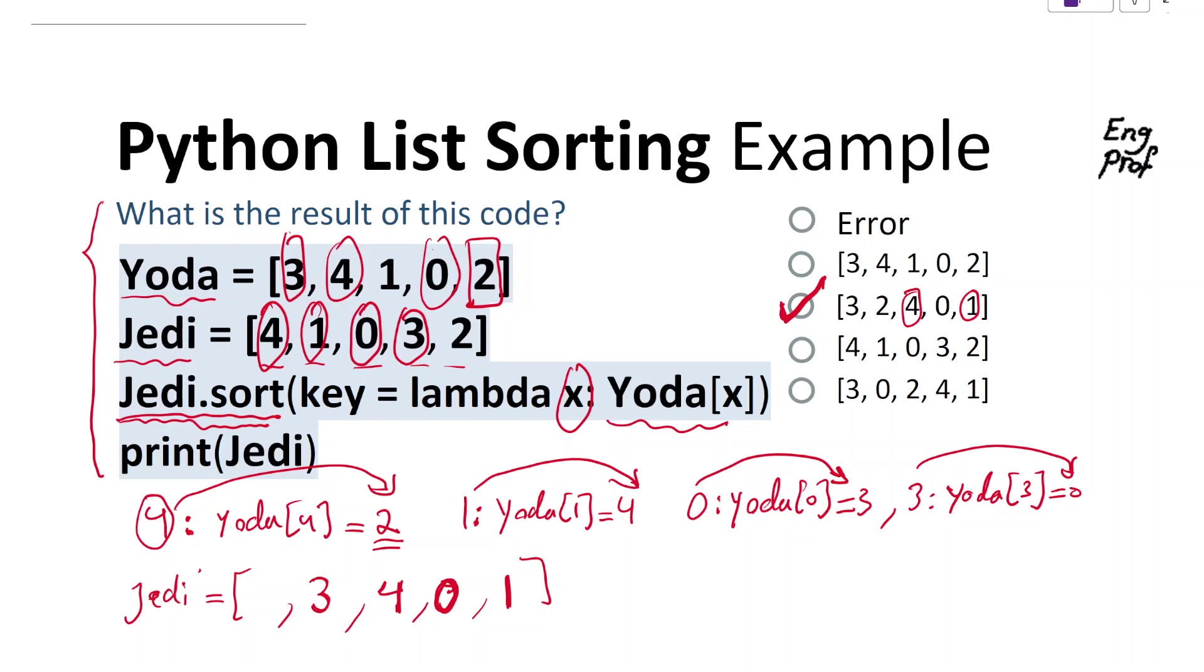And finally, for the last one, 2, we should go to Yoda[2]. Let me take a look. This goes to position 3, because that's position 0.